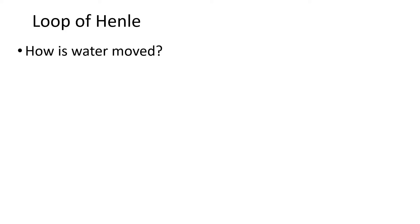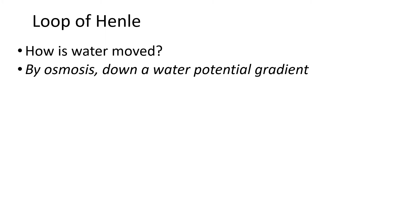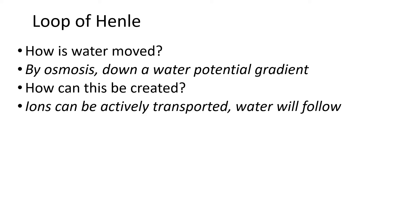Water moves by the process of osmosis and will only move down a concentration gradient - down a water potential gradient. To create a water potential gradient, you can actively transport ions. If you move sodium ions, or actually any solute, water will follow. Today we're going to talk about sodium. So if you create a water potential gradient by moving ions, then water will move by osmosis.